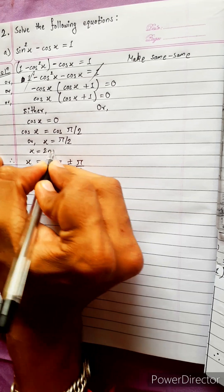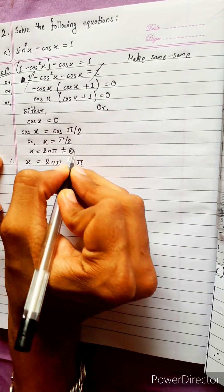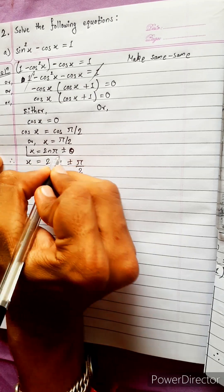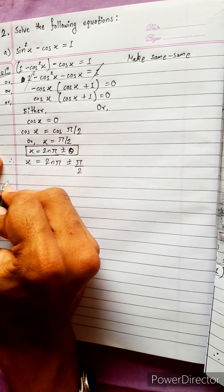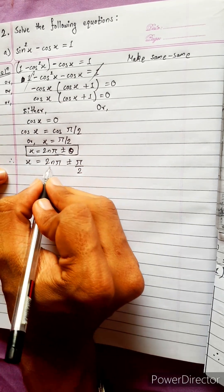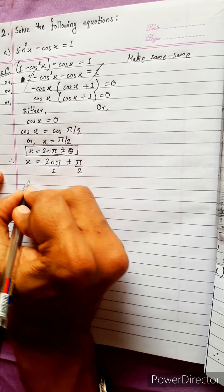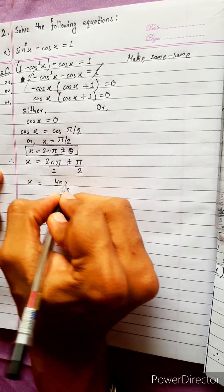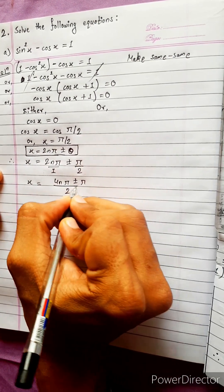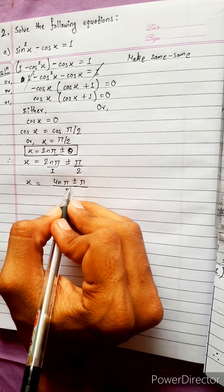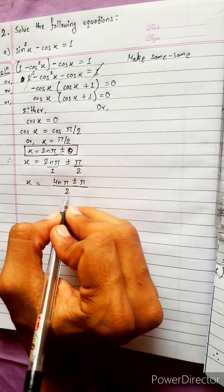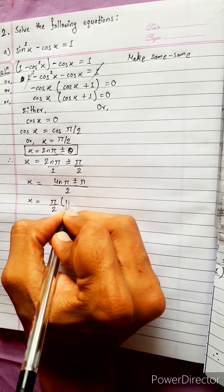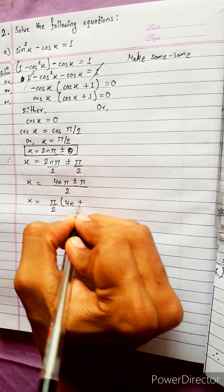In terms of the cos general formula, x equals 2nπ plus or minus theta, where the angle theta is pi by 2. So x equals 2nπ plus or minus pi by 2 — taking pi by 2 as common.